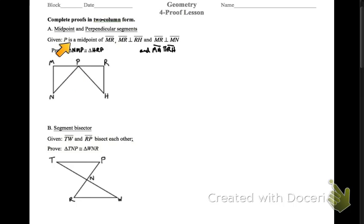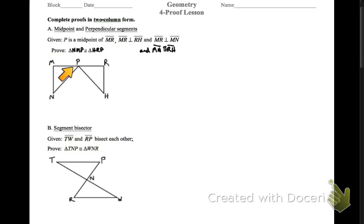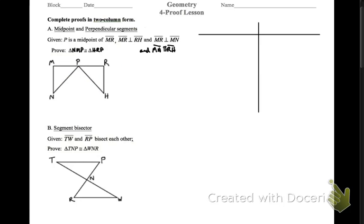Alright, so here we go. Given P is a midpoint and we have some perpendicular sides and some more information, I'm going to prove that these two triangles, NMP and HRP, are congruent. To do a two-column proof, we have statements on the left and reasons on the right.